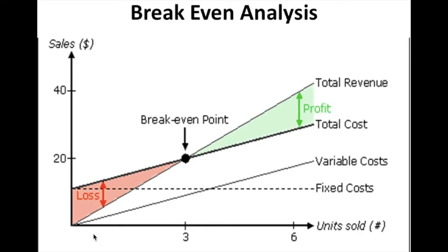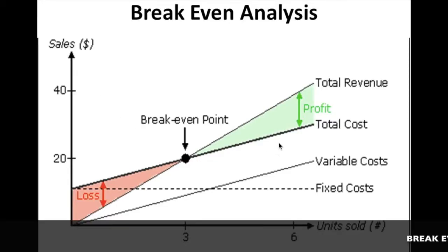Variable cost is different from fixed cost because it is not constant. The raw materials for sugarcane juice — sugarcane and sugar — are not constant in price throughout the year; they change from day to day. That's why variable cost is not constant. Also, for making sugarcane juice we have to employ a person, and we have to pay different amounts for labor from day to day.